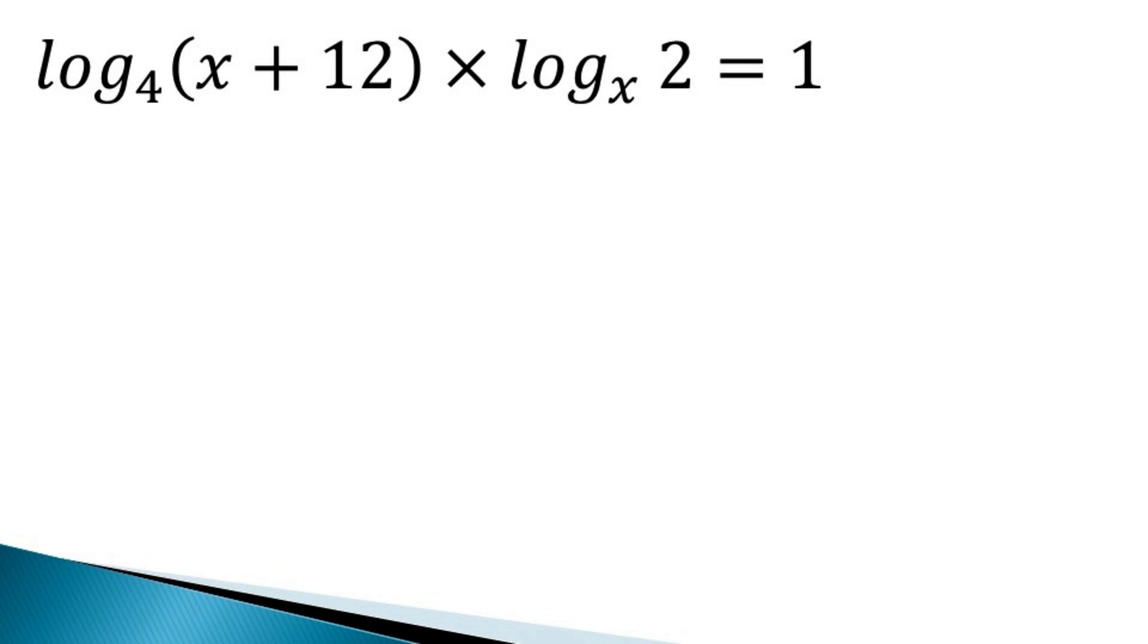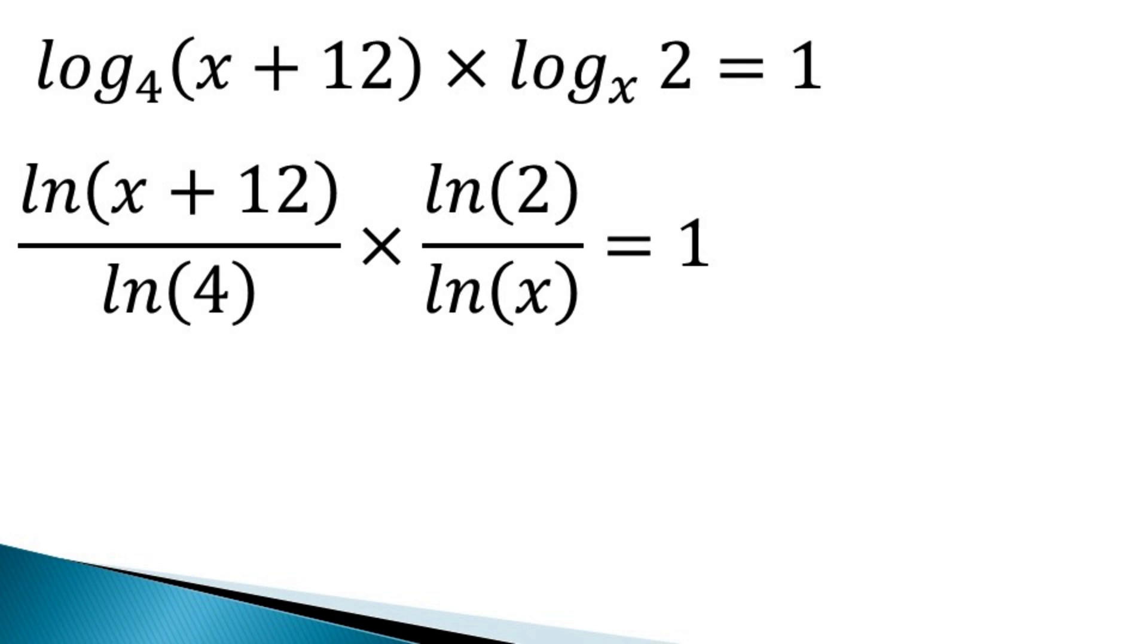So using the change of base formula, the first term becomes ln(x + 12) divided by ln 4. And the second term becomes ln 2 divided by ln x and whole is equal to 1.